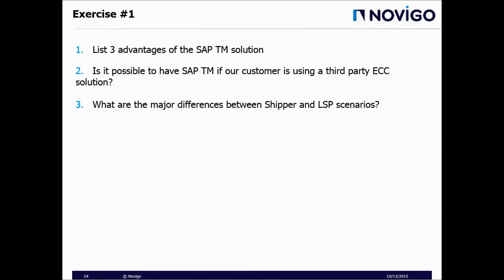I have prepared some exercises based on the lecture we just went through. Exercise one: list three advantages of the SAP TM solution. Exercise two: is it possible to have SAP TM if our customer is using a third-party ECC solution? Exercise three: what are the major differences between shipper and LSP scenarios?